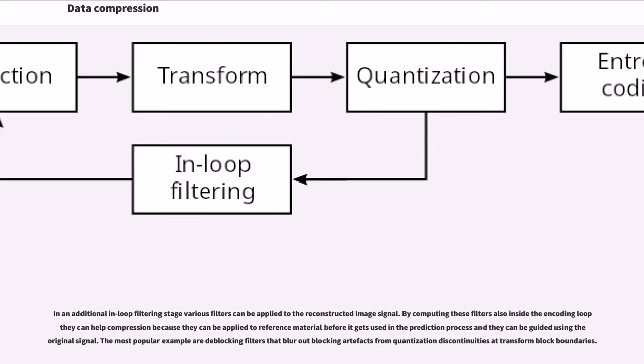In an additional in-loop filtering stage various filters can be applied to the reconstructed image signal. By computing these filters also inside the encoding loop they can help compression because they can be applied to reference material before it gets used in the prediction process and they can be guided using the original signal. The most popular example are de-blocking filters that blur out blocking artifacts from quantization discontinuities at transform block boundaries.